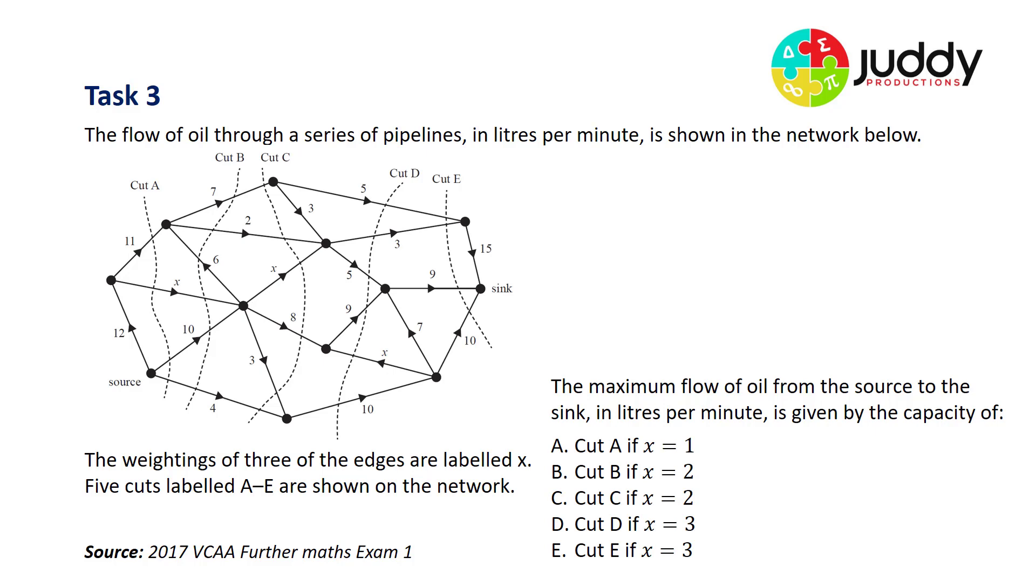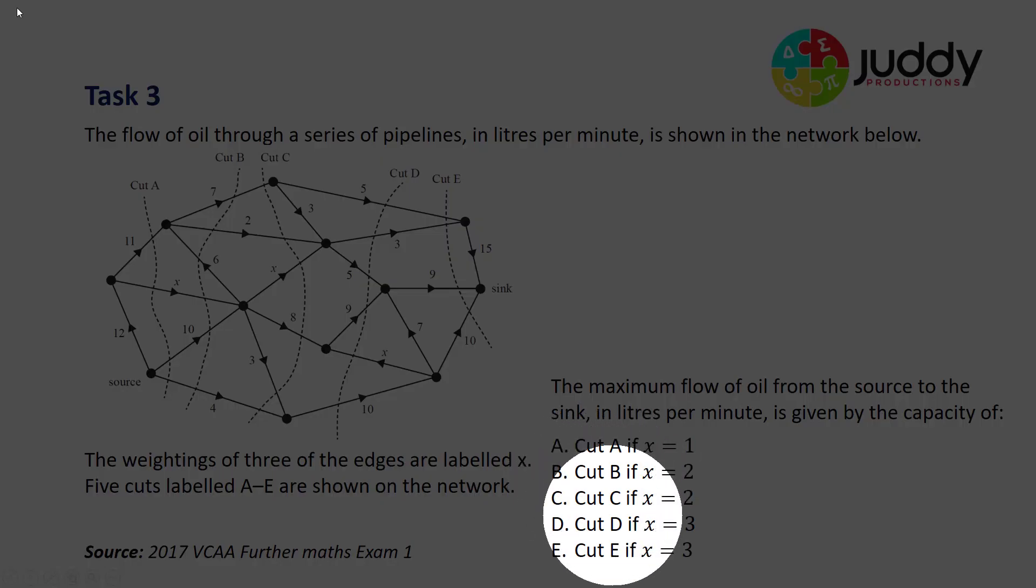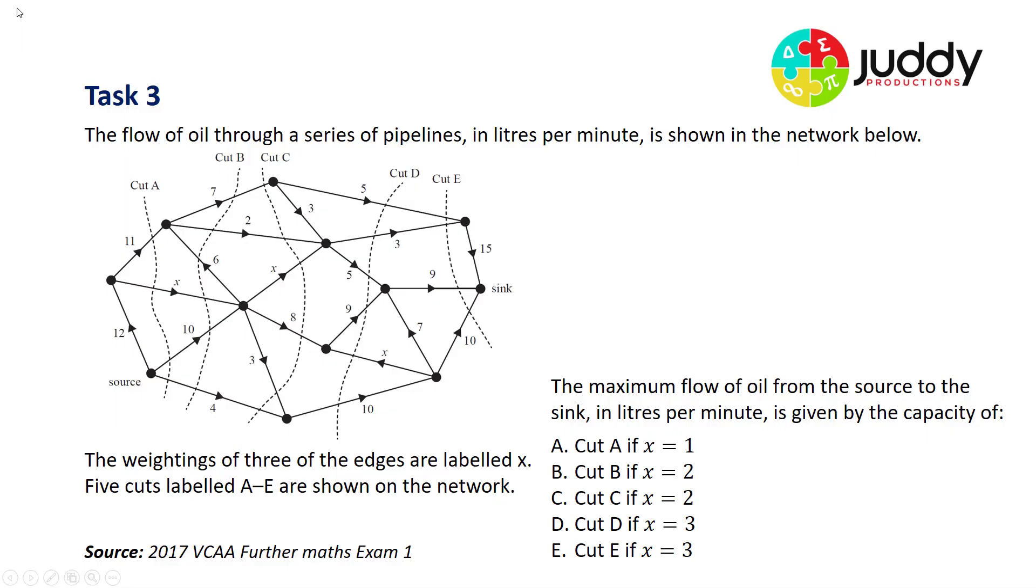The maximum flow of oil, which is another way of saying minimum cut, from the source to the sink in liters per minute is given by the capacity of one of five options. Option A says cut A represents the maximum flow if X equals one. Option B states cut B is the maximum flow if X equals two. Option C says cut C if X equals two. Option D says cut D if X equals three. And option E states cut E if X equals three. So we have to investigate the capacity of each one of these cuts.